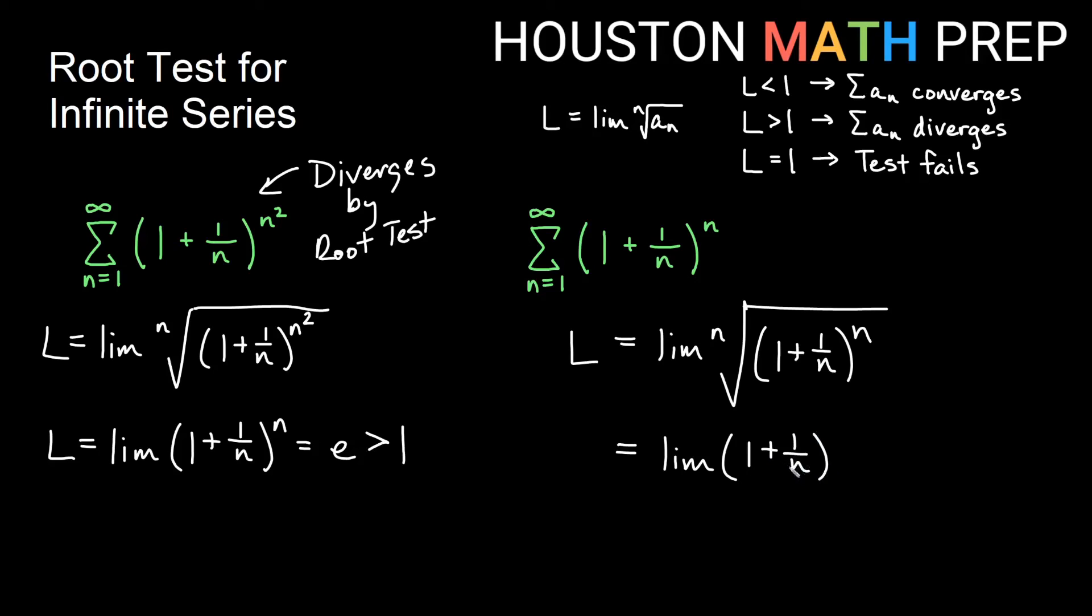And as n gets larger and larger, we will get 0 for this fraction on the right. So we'll get 1 + 0. The limit for this one is actually 1. And so what we would need to do for this one is find some other test because we get that the root test here is going to fail with a limit of 1.